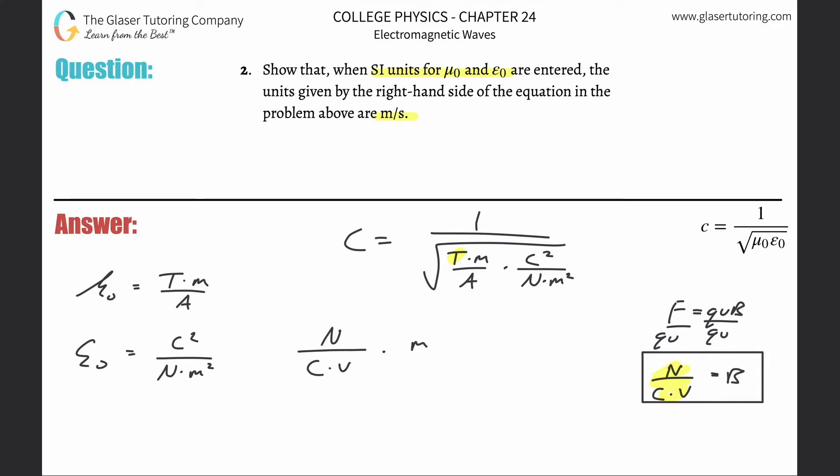Now amps are known as coulombs per second—that's current. Current is the change in charge over the change in time, so that's coulombs per second. I'm going to write that in now: coulombs per second. So that takes care of that side. Then it's going to be multiplied by coulombs squared over newtons times meter squared.